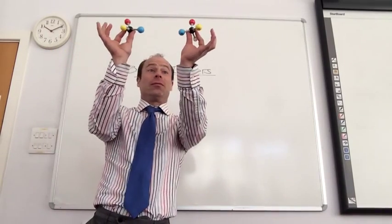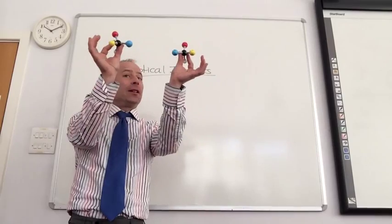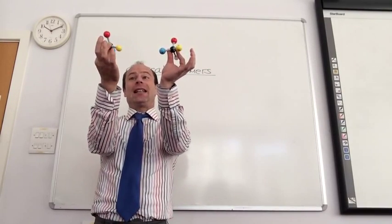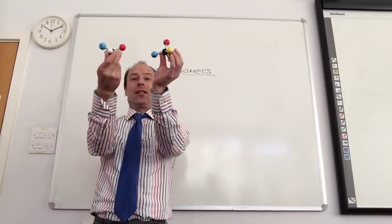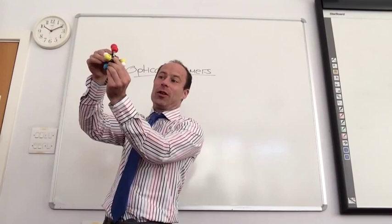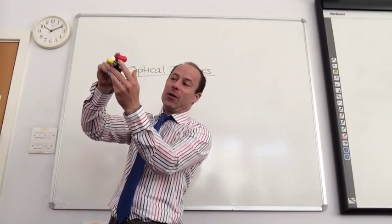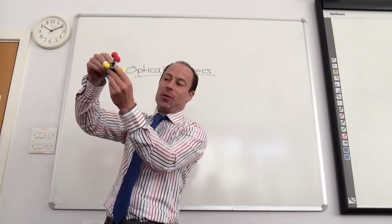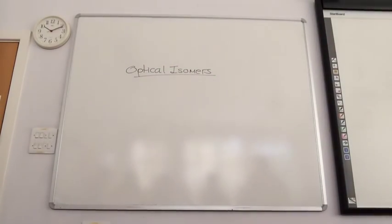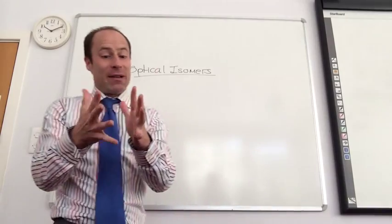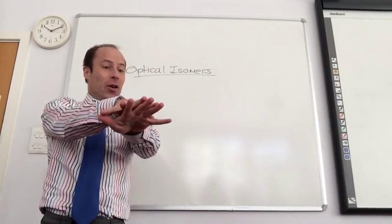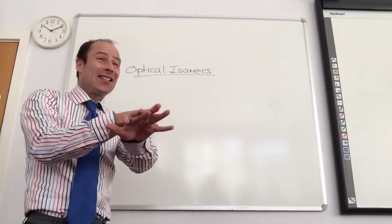So this is the mirror image of it. If I try and rotate the mirror image around, like so, I cannot superimpose this molecule onto this. The yellow is where the white is on opposite sides. So they're mirrors. And we talked about the fact it's like your hands. Your hands are mirror images of each other and you cannot superimpose one onto the other.